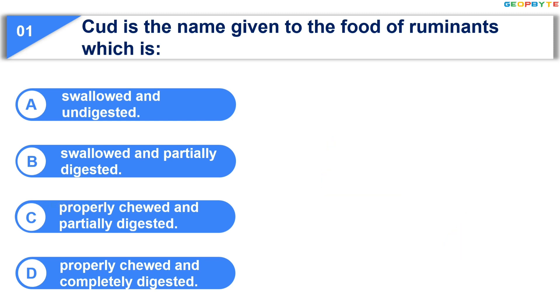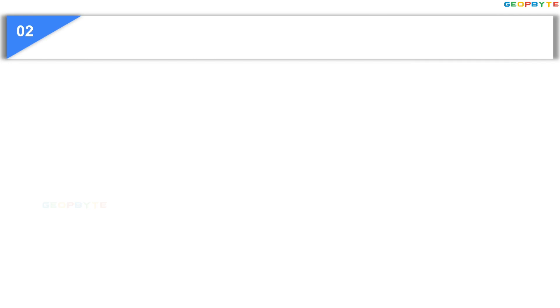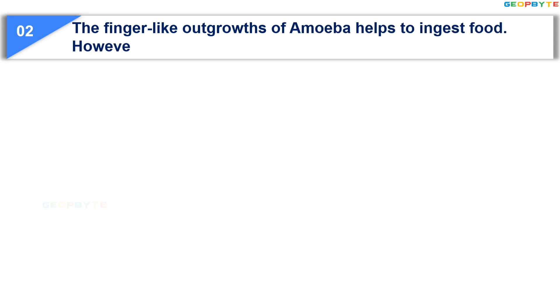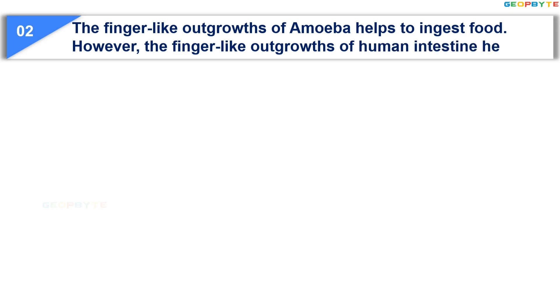Your time is up and the correct answer is Option B: swallowed and partially digested. Moving to the second question: the finger-like outgrowths of amoeba help to ingest food. However, the finger-like outgrowths of human intestine help to —